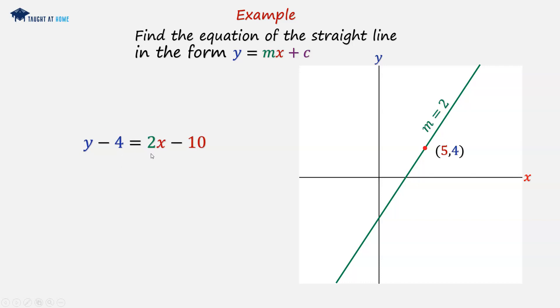We want y equals something on the right hand side, so we need to isolate y here. So we can do this by adding 4 to both sides. This minus 4 and this plus 4 cancels out, and this minus 10 plus 4 becomes minus 6.